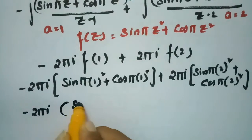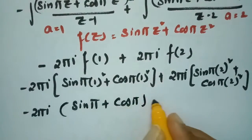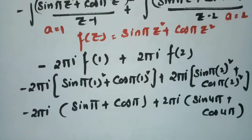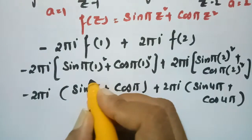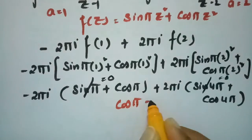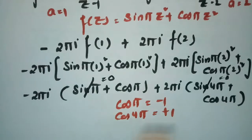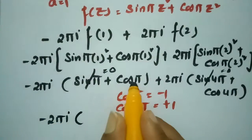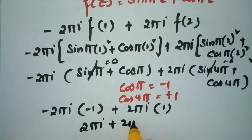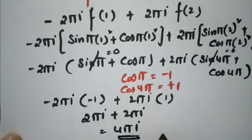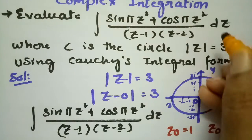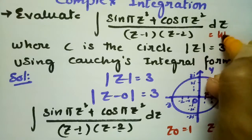Evaluating the trigonometric values: sin(nπ) = 0, so sin π = 0 and sin 4π = 0. Also cos π = −1 and cos(4π) = +1 (even multiple of π). Substituting: −2πi(0 + (−1)) + 2πi(0 + 1) = 2πi + 2πi = 4πi. The final answer is 4πi.